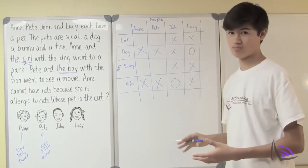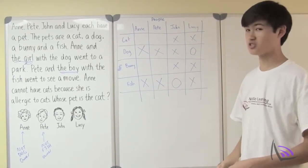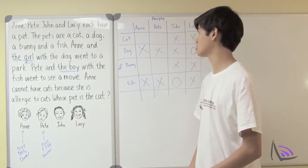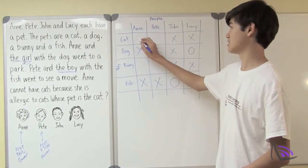So we're almost done. We just need a little bit more. So let's go to the last line. Ann cannot have cats because she is allergic to cats. That takes out this one.